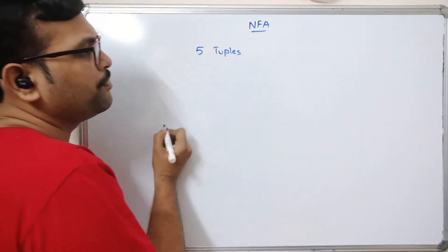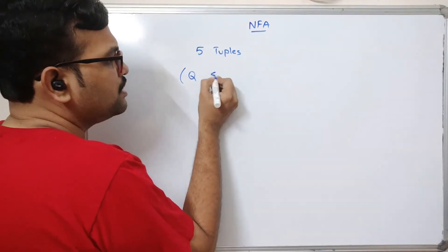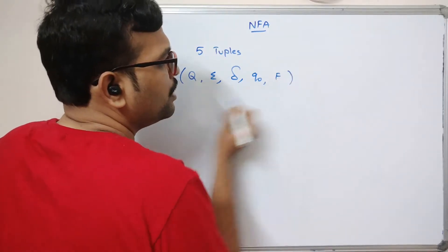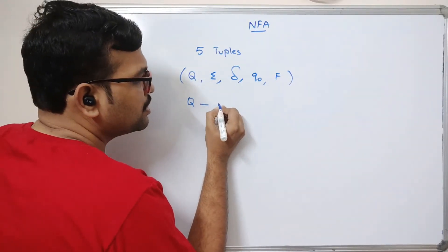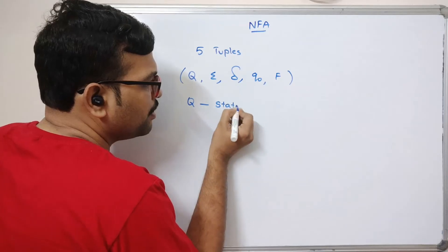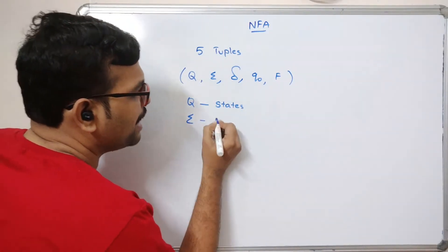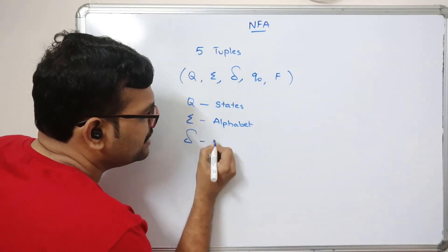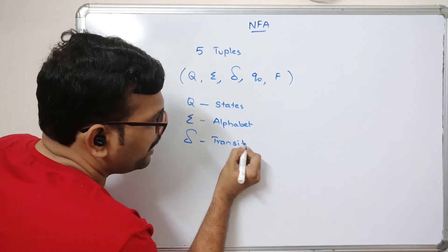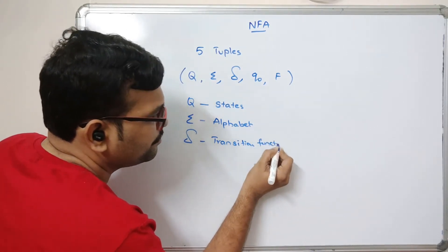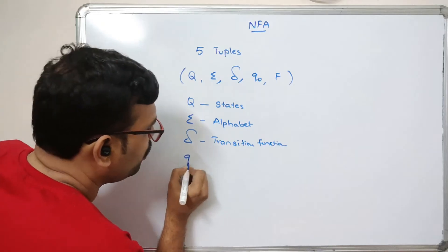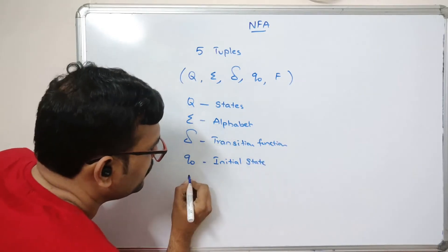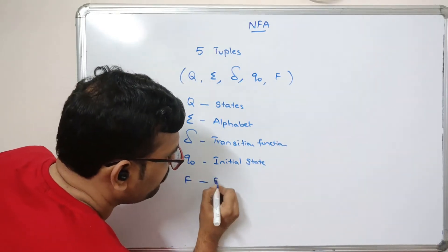The NFA is represented as a 5-tuple: Q, sigma, delta, Q-naught, and F. Q is the set of states, sigma is the alphabet, delta is the transition function, Q-naught is the initial state, and F is the set of final states.